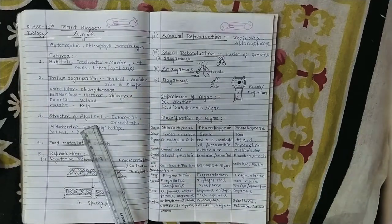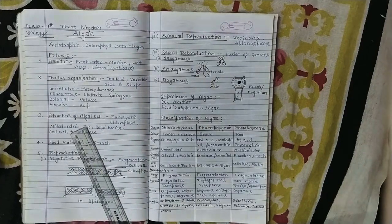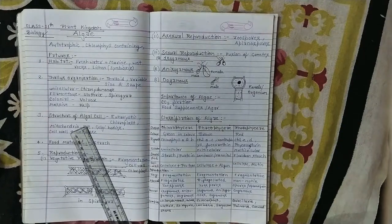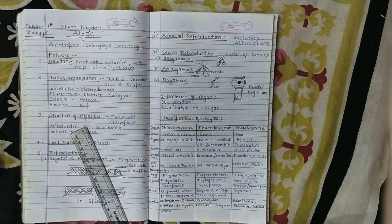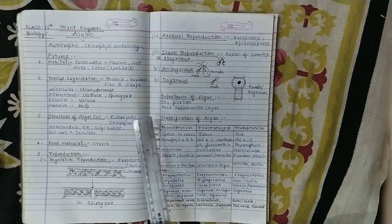The size can be up to 100 meters, like kelp. Next topic is the structure of algal cell. The plant kingdom, algae are eukaryotic.